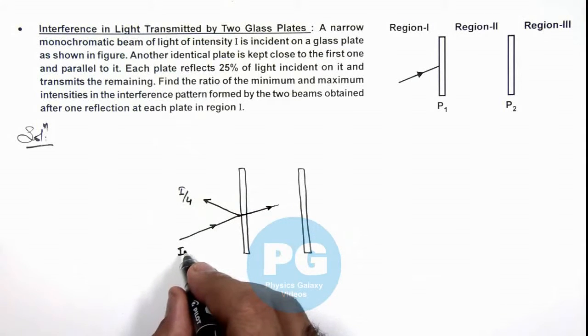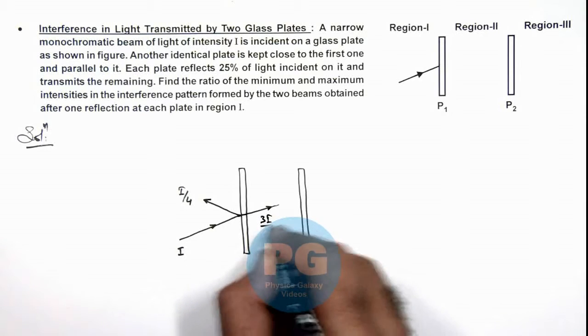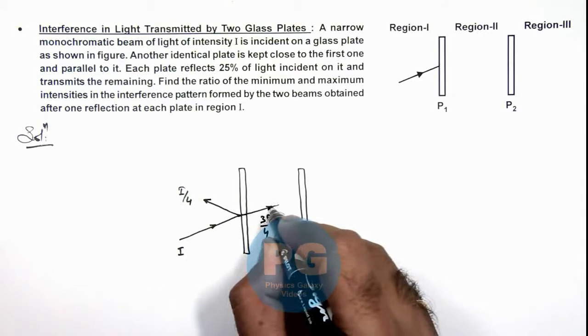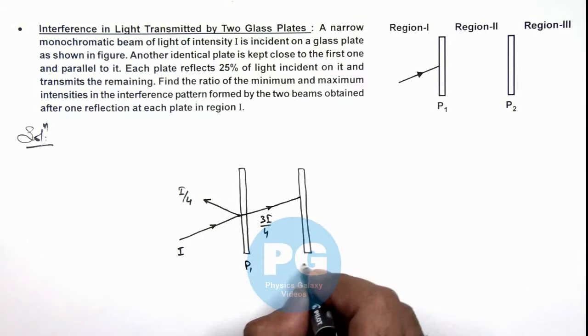which is 3/4 times I, so this is 3I/4. And when it'll be incident on the second plate, this plate is P1, this is P2.